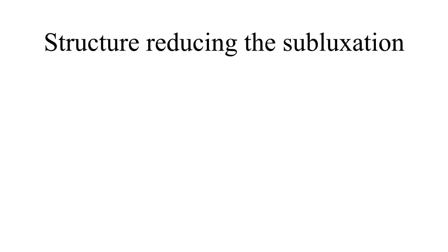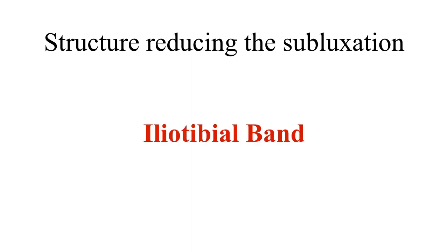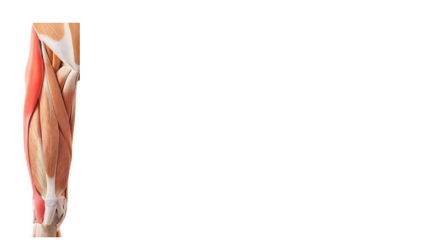The important anatomical structure that reduces this tibial subluxation is the iliotibial band. As seen in this anteroposterior view of the anatomical picture of the thigh, the iliotibial band, shown in red, extends from its origin in the iliac crest, runs along the lateral aspect of the thigh, and gets inserted into the upper part of the lateral aspect of the tibial condyle.